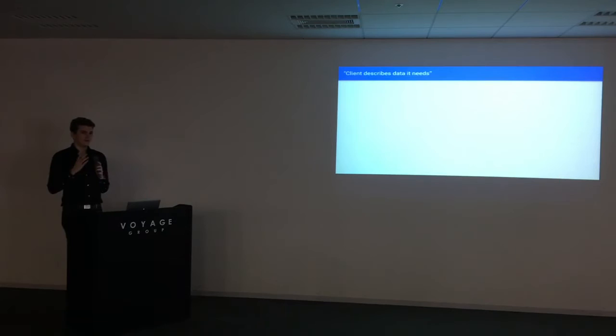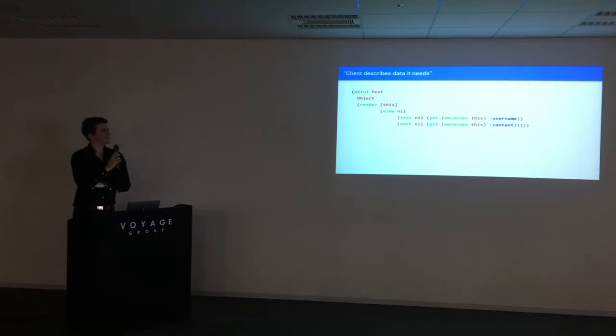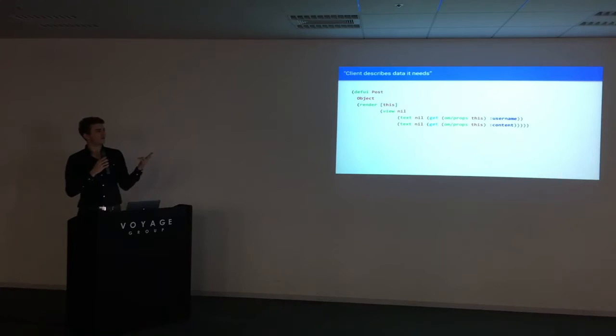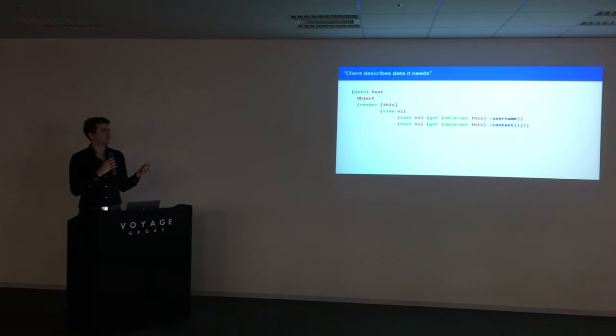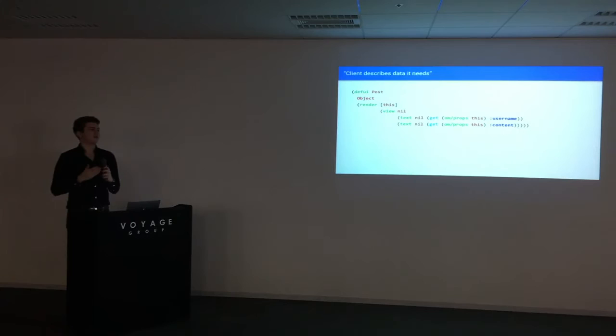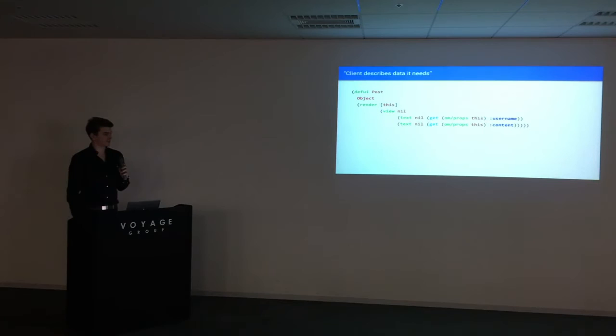In OM, if you want to write a React component, you would do something like this — ClojureScript code. Inside here, we describe our post component. On rendering, we render a view, and inside that view two text boxes: one with username and one with content. View is a UI view here, and text is a NSTextField — so these are actually native things, not a browser div. To get that data — the username and content — we query something called the props of this current component. So our component already says that it needs this data to operate, but it doesn't care where it comes from.